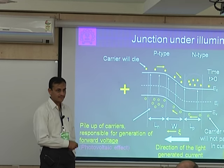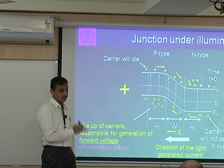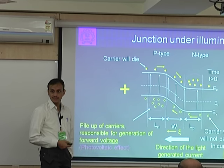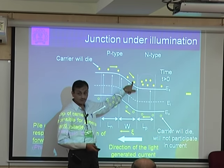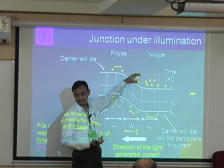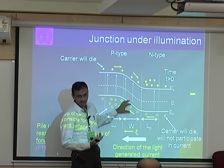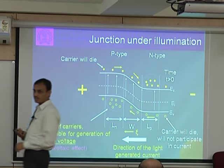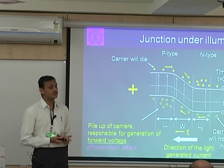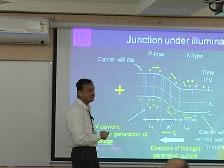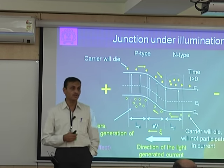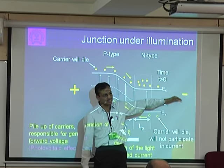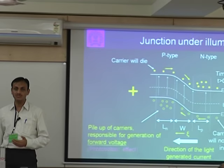This is very important to understand because the whole design of the solar cell depends on this. When talking about increasing efficiency, you have to worry about where energy losses are happening — losses during carrier transport, losses at the contact, light reflected away, light transmitted through, recombination losses, and losses due to series resistance and shunt resistance.